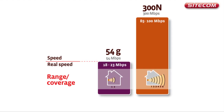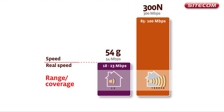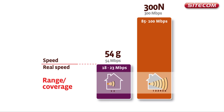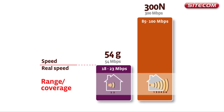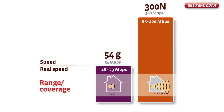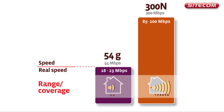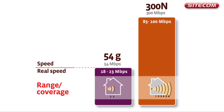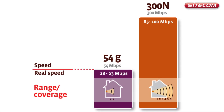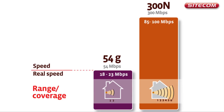The speed of 300N is also much better than that of 54G. 802.11N has a theoretical speed of 300 Mbps. In practice, it is easily possible to achieve a speed of up to 100 Mbps, which is approximately just as fast as using a wired connection.